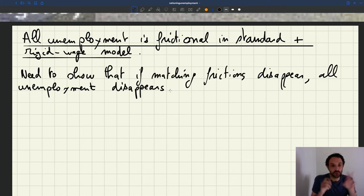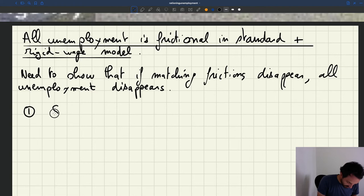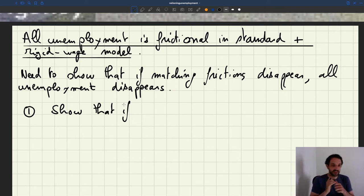There are two ways to make the matching frictions disappear. The simplest way is to show that if the matching frictions—how do they manifest themselves? On the firm side, they manifest themselves because there is a cost of advertising a vacancy. If advertising a vacancy was free, you could post infinitely many vacancies and get whoever you want. So the manifestation of this friction, the fact that it takes time and effort to fill your vacancies, manifests itself by the fact that the recruiting cost is positive.